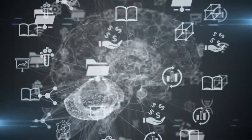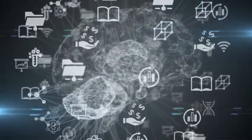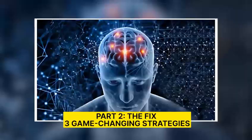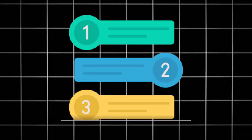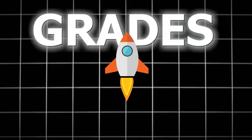So how do we train your brain to actually retain information? Part 2. The Fix. Three game-changing strategies. Let's break this down into three key strategies. You master these, and your grades will skyrocket.